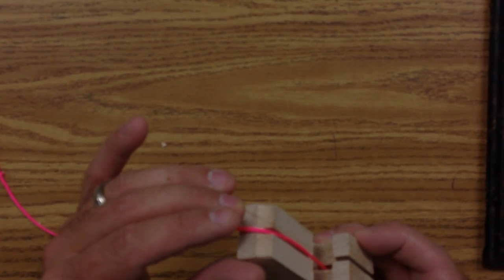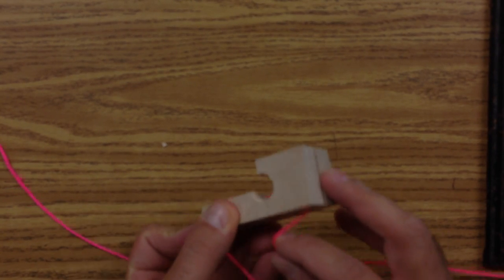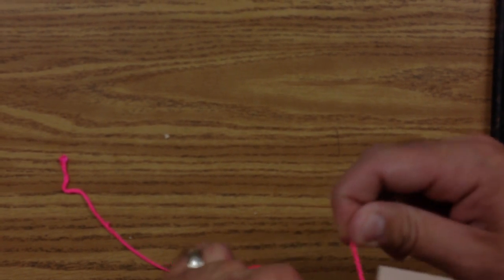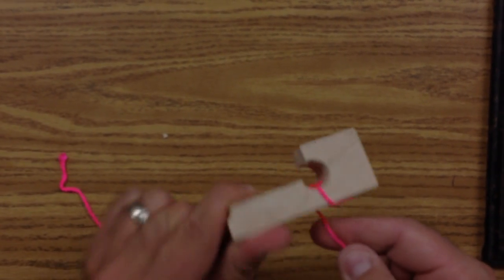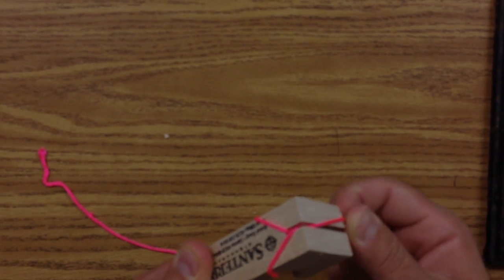And then with your finger, push down on one end. And with the back, see the back of the string there? You put it through the hole here. So you wrap it around. Put it through this cutout here.